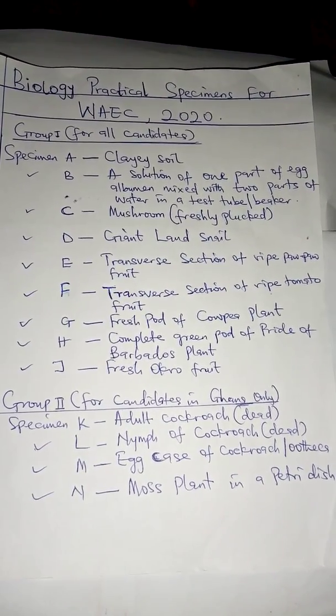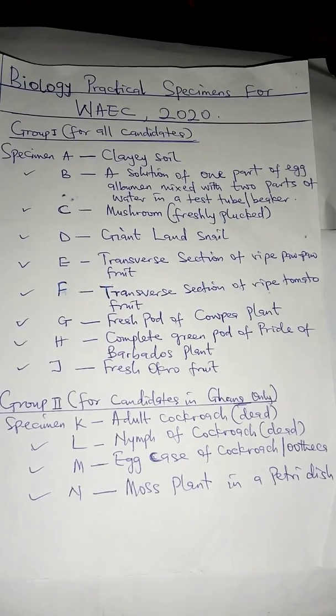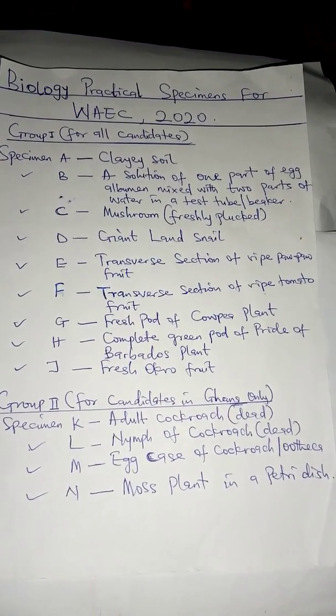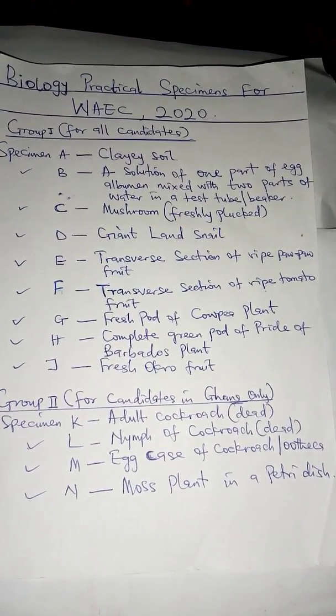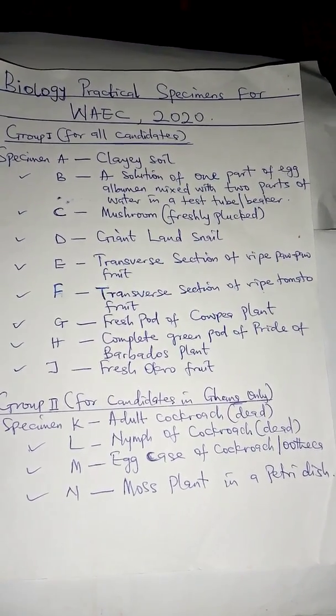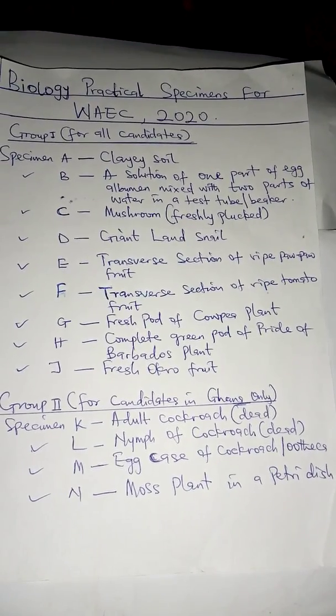Specimen D: giant land snail. Specimen E: transverse section of ripe purple fruit. Specimen F: transverse section of ripe tomato fruit.